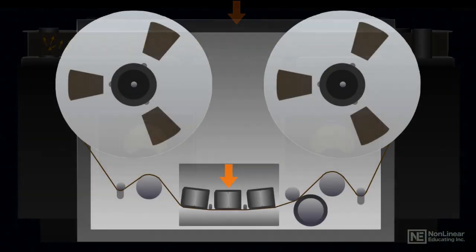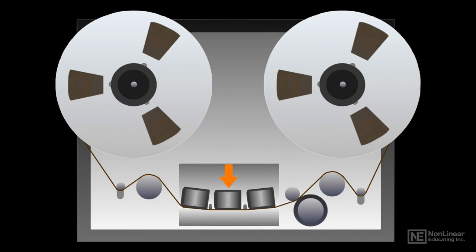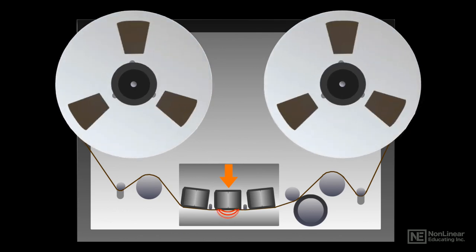The record head converts the incoming voltage for a particular track into lines of magnetic force, or magnetic flux. The tape is pulled past the record head through the magnetic flux from the head, which forms at the gap of the magnet for a track in the record head.